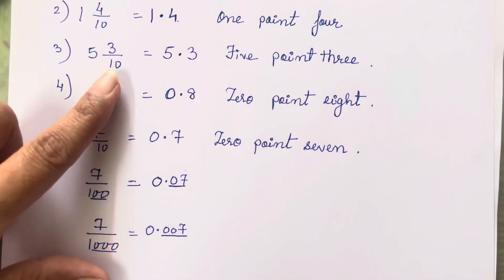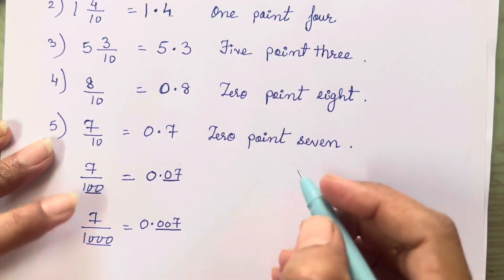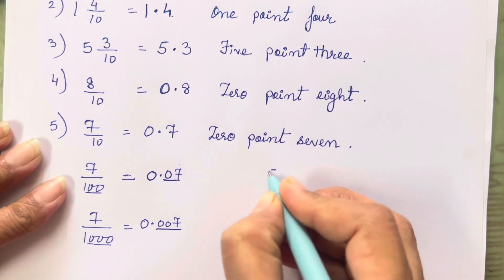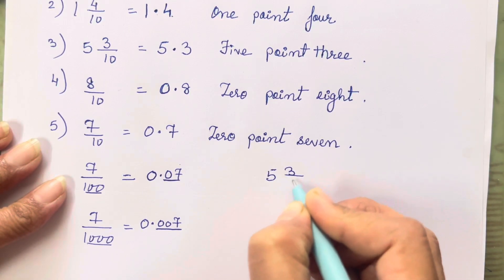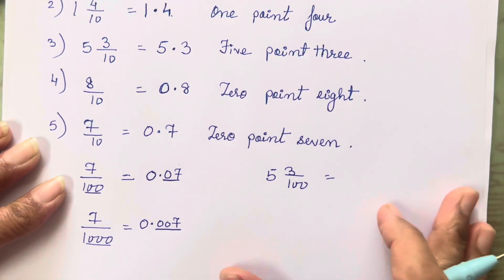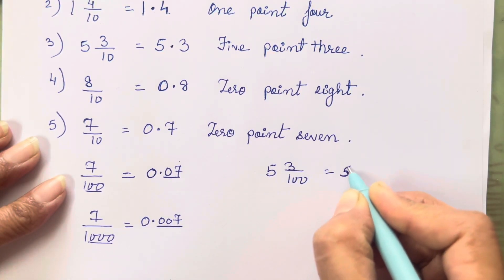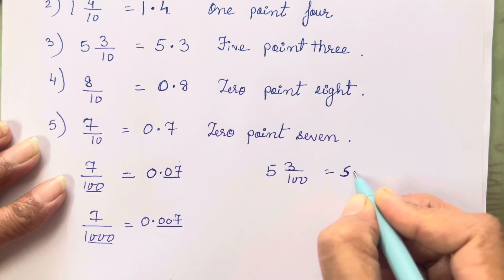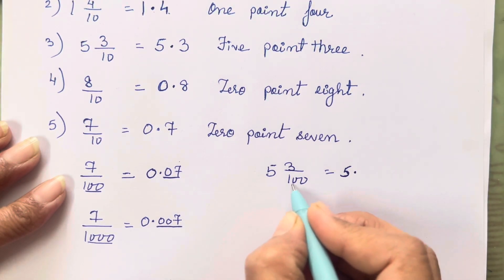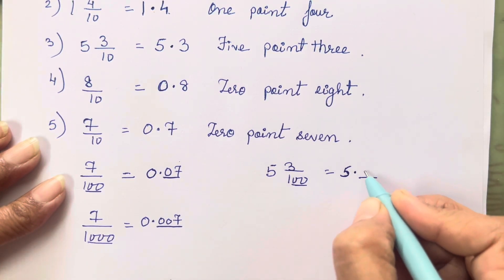I will take this example and show you for 1000 and 100 as well. So for 5 3/100 — how are you going to write it in decimal form? 5 will come to the left hand side, then a decimal point, but we need two digits after the decimal point.